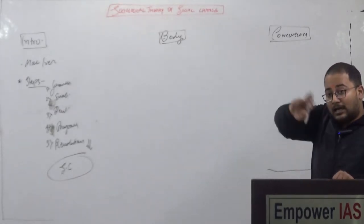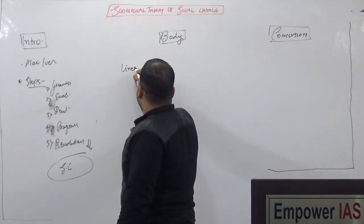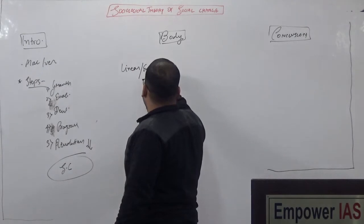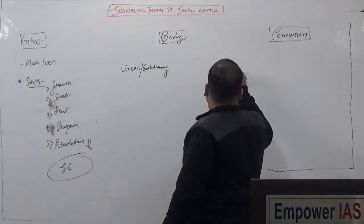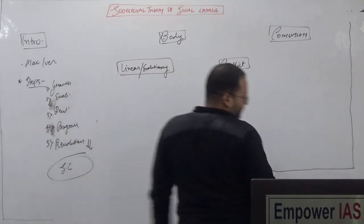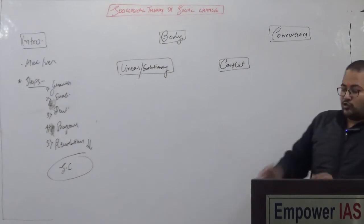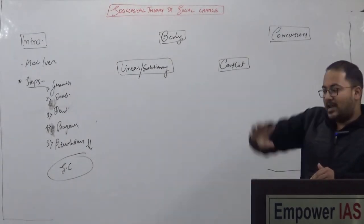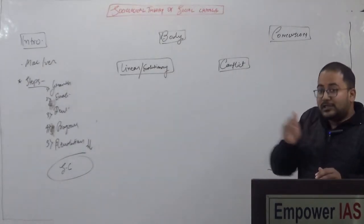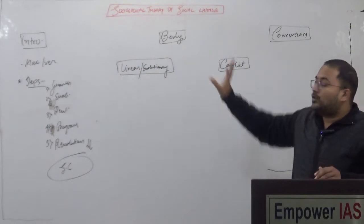In the next video we will discuss the cycle theory of social change. The linear theory, or functional theory, or evolutionary theory of social change, states that society moves from one stage to another stage and never comes back to the previous stage. This movement leads to development in the society and brings social changes in the society.